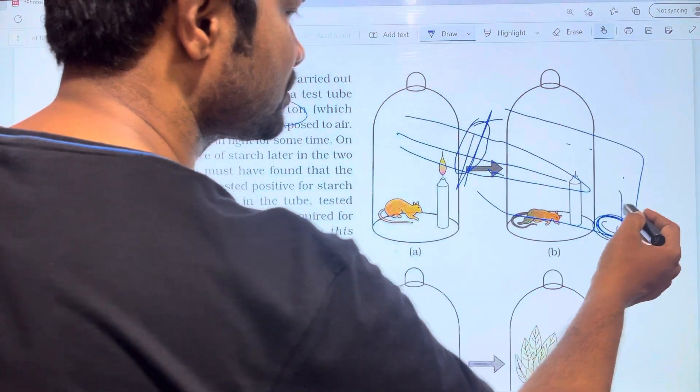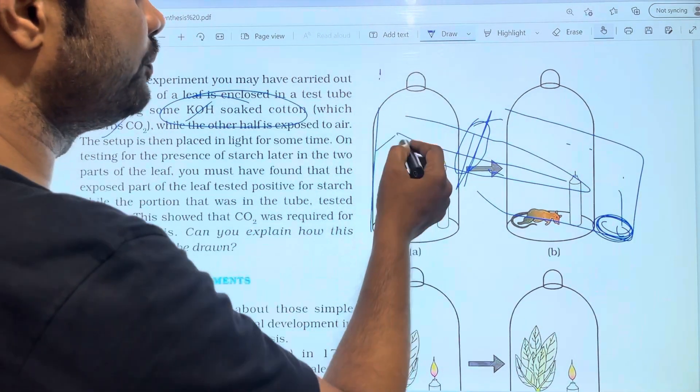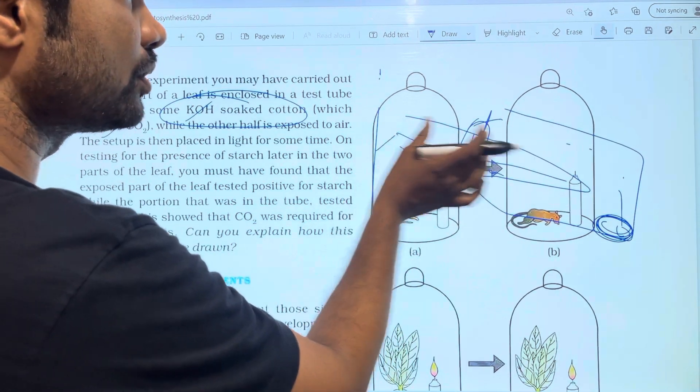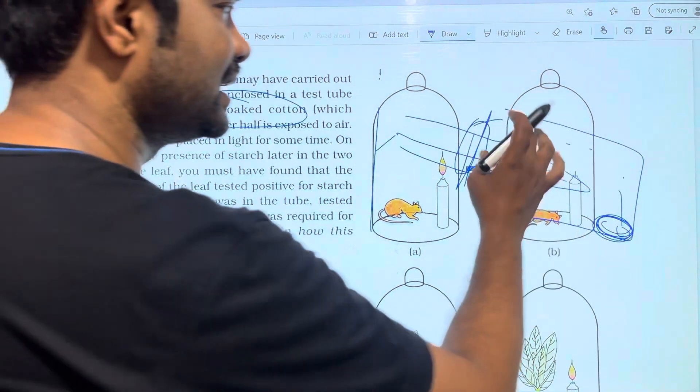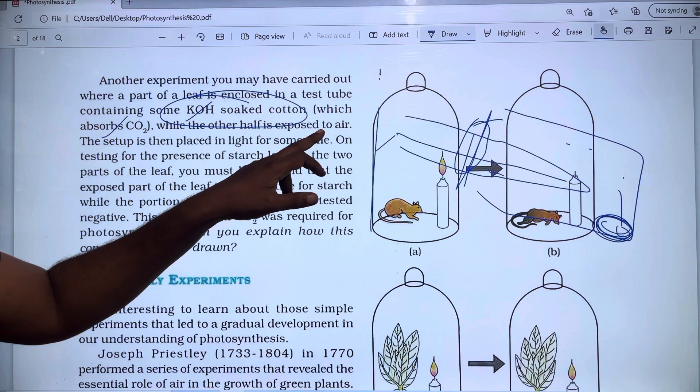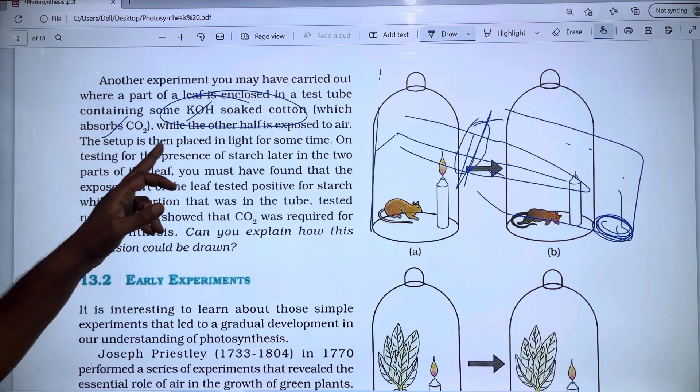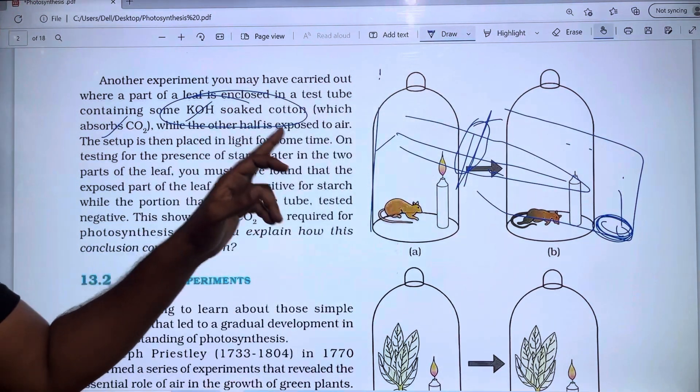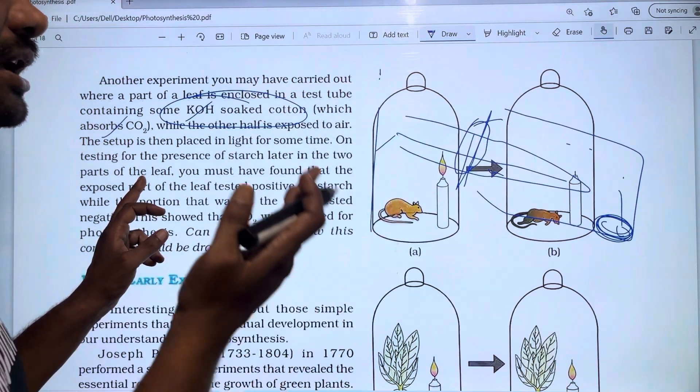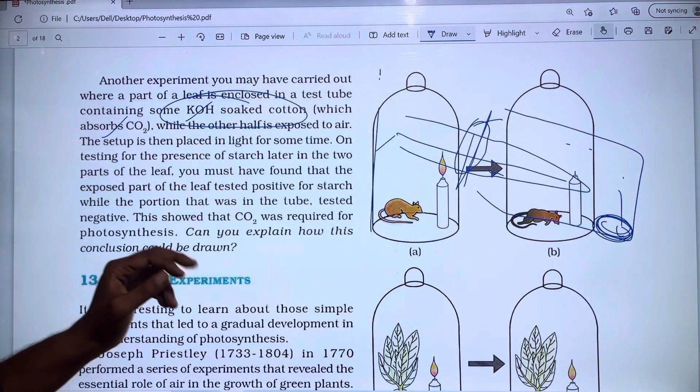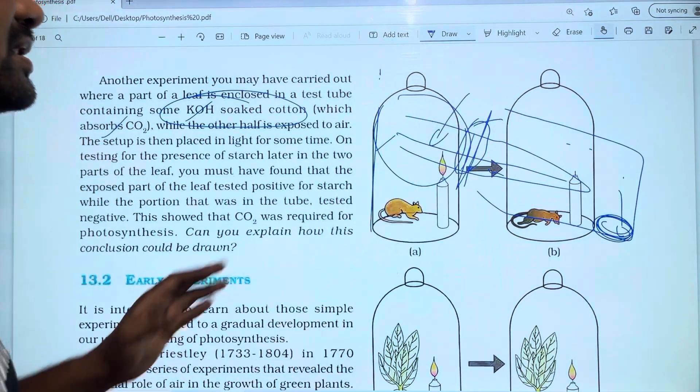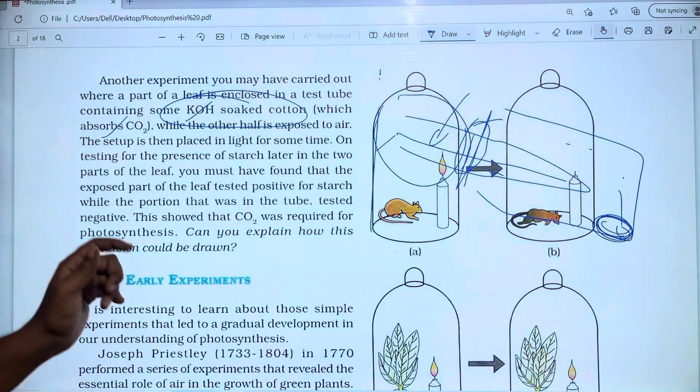The setup is placed in sunlight for some time, then tested for the presence of starch in the two parts of the leaf. The exposed part of the leaf tested positive for starch.